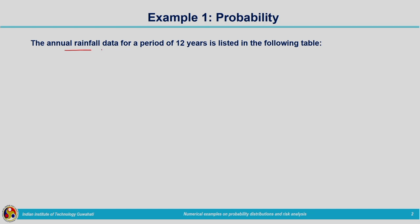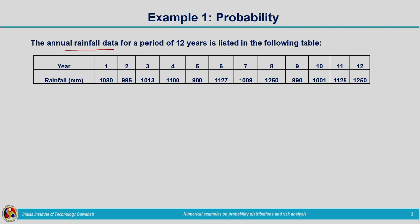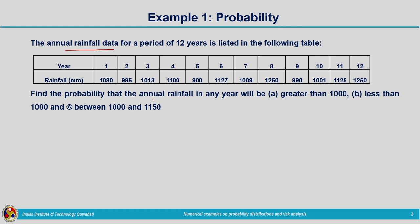The first example is on probability. The annual rainfall data for a period of 12 years is listed in the following table. We need to find the probability that the annual rainfall in any year will be greater than 1000 mm, less than 1000 mm, and between 1000 and 1150 mm. Since we have no distribution details, we will use the basic probability expression.